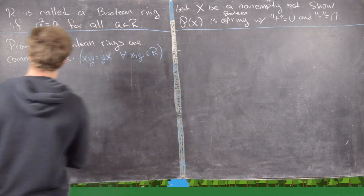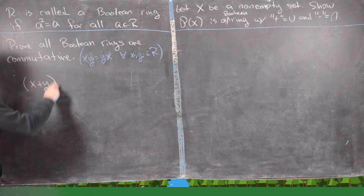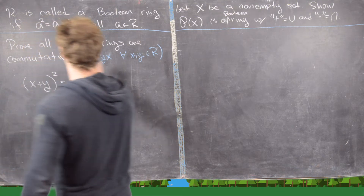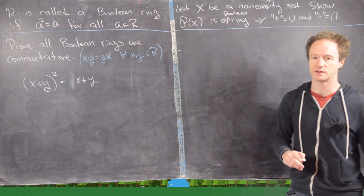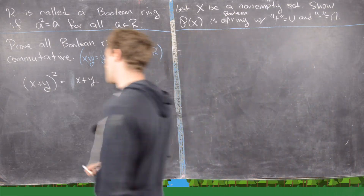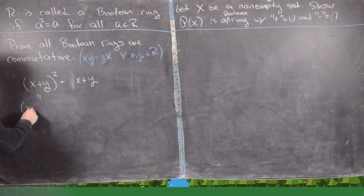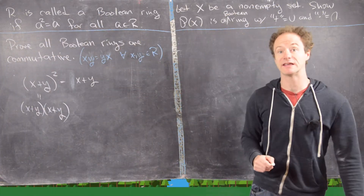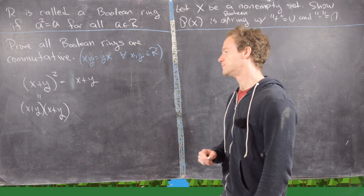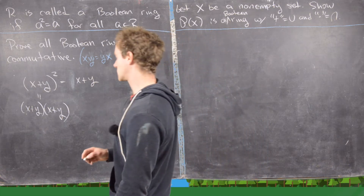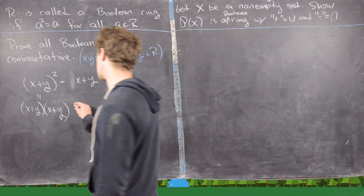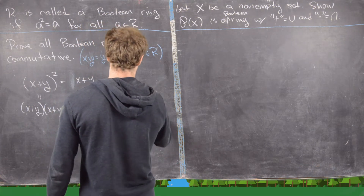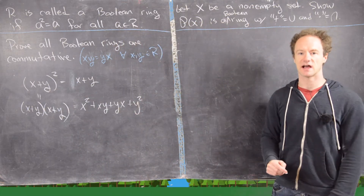The cleanest approach is to look at x plus y squared. On one hand, that equals x plus y because every element in a Boolean ring squares to itself. On the other hand, it equals x plus y times x plus y, which we expand — keeping in mind we haven't assumed commutativity — giving x squared plus xy plus yx plus y squared.